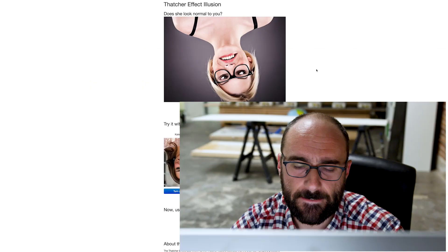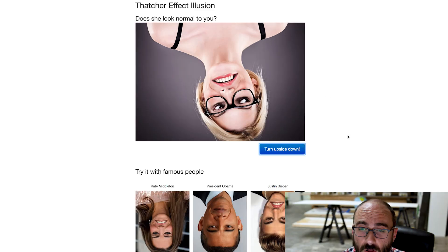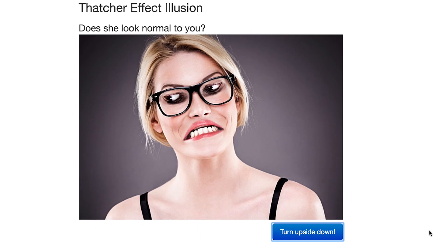But now let's talk about the Thatcher illusion. Right now you probably already think that the face looks a little bit weird. Well, if you turn it upside down, you'll see that it is actually really weird. When a face is upside down, all of the cognitive tools we have for analyzing how it looks and what it's doing, well, they're not as great at doing their job.